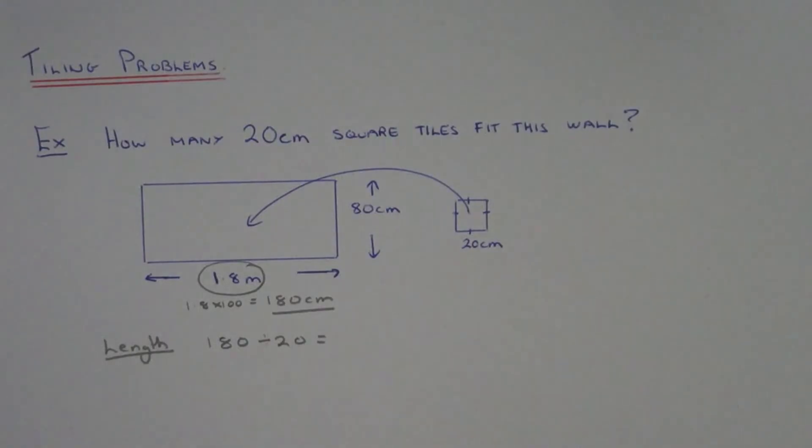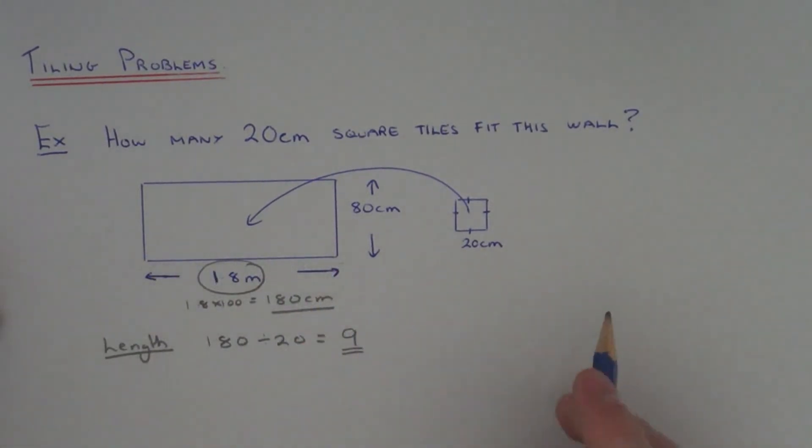So if we figure that one out, 20, 40, 60, 80, 100, 120, 140, 160, 180. So that goes 9 times. We can fit 9 tiles across the length of the wall.